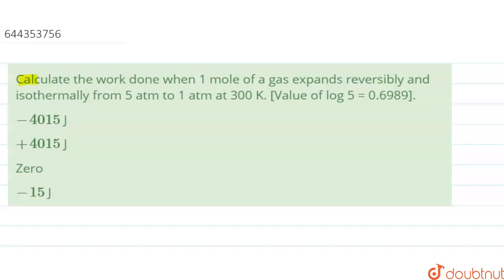Hello. In this question, we are given: calculate the work done when one mole of gas expands reversibly and isothermally from 5 atm to 1 atm at a temperature of 300 Kelvin. The value of log 5 is 0.6989. So we have to calculate the work done in an isothermal reversible process when the gas expands from 5 atm to 1 atm at the temperature of 300 Kelvin.